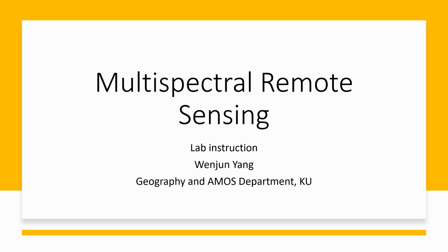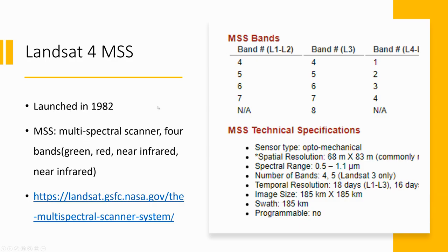Let's briefly review what we have learned from the lecture. First, Landsat 4 satellite was launched in 1982. It has the MSS — Multi-Spectral Scanner — with four bands: green, red, and two near-infrared.